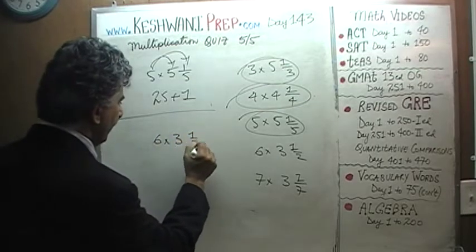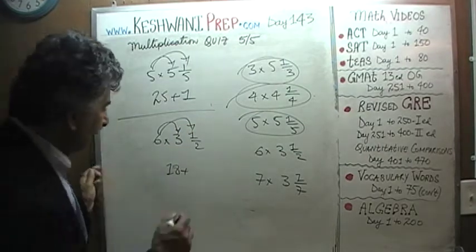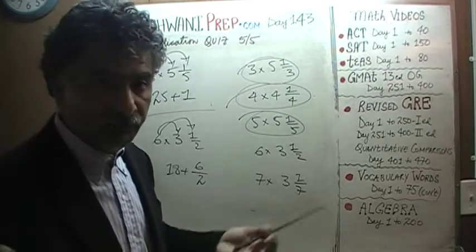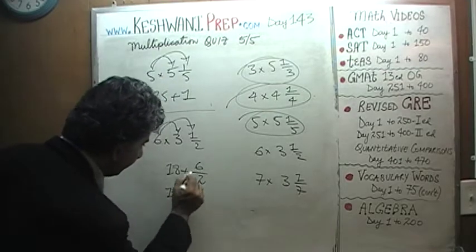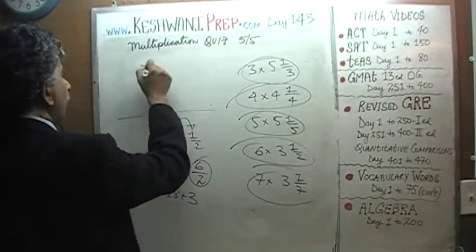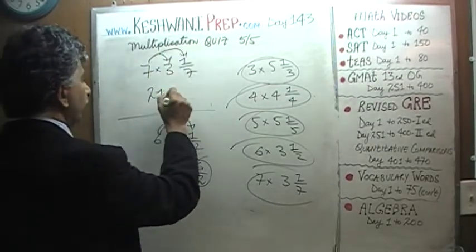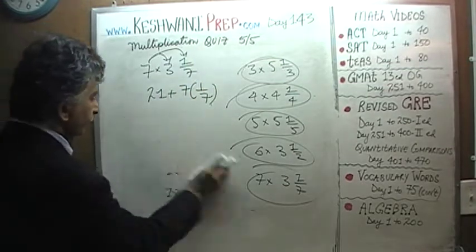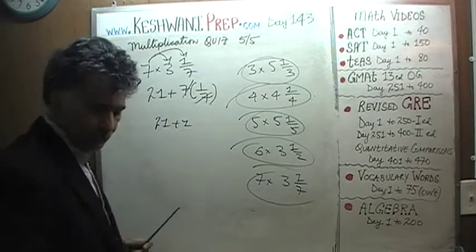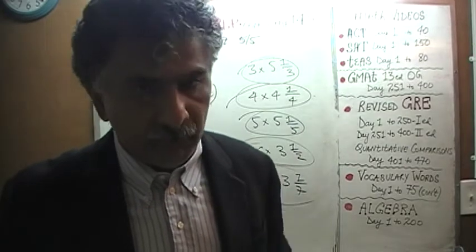Six times three and a half: six times three is eighteen, plus six halves. Six halves make three — two halves make one, four halves make two, six halves make three. Seven times three and one seventh: seven times three is twenty-one, and seven one-sevenths is one, so it's twenty-one plus one, which is twenty-two.